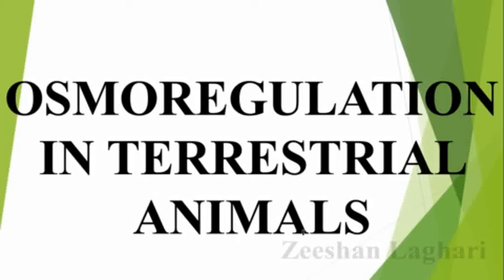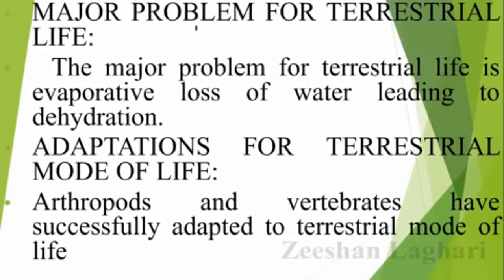Terrestrial is the term used to describe living organisms that live and grow on land. If we are talking about land habitat, then which habitat is terrestrial habitat? This is the term used to distinguish from aquatic habitat. We will study osmoregulation in terrestrial habitat animals in terms of the land environment.